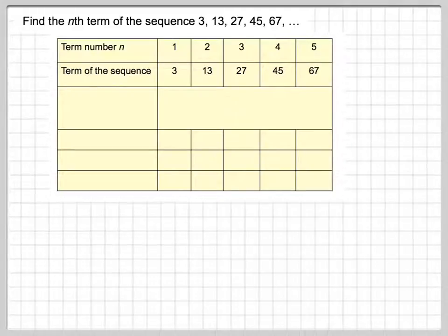First of all, you need to make a big table like this, with lots of spaces. So here we have the term number, 1, 2, 3, 4, 5, and here we have the actual terms of the sequence.